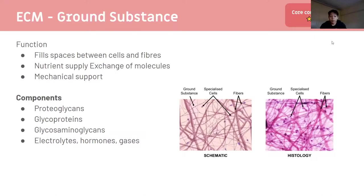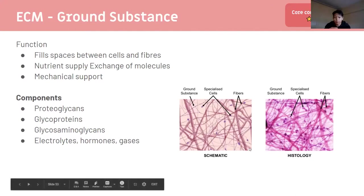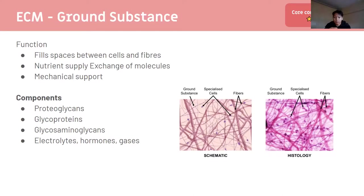Ground substance components include proteoglycans, glycoproteins, electrolytes, hormones, gases, and glycosaminoglycans. Its function is to fill spaces between cells and fibers, providing a solution for nutrient supply and molecular exchange, and providing mechanical support. In diagrams, the thick lines are fibers, and the fluid filling all the space is the ground substance. The extracellular matrix to cell ratio is very high — a lot of ECM.